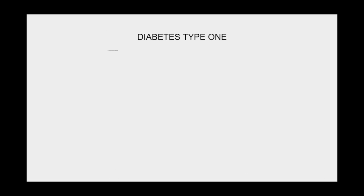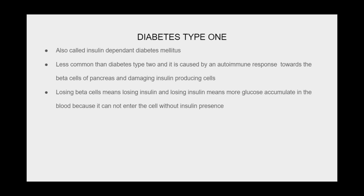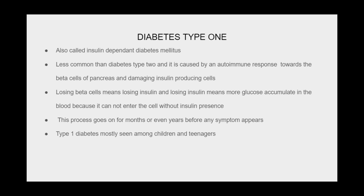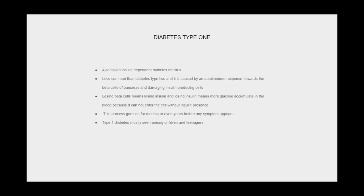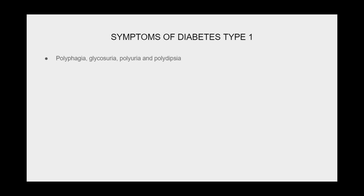Type 1 diabetes, also called insulin-dependent diabetes mellitus, is less common than type 2 and is caused by an autoimmune response that damages the beta cells of the pancreas, destroying insulin-producing cells. Losing beta cells means losing insulin, and without insulin, more glucose accumulates in the blood because it cannot enter the cell. This process can go on for months or even years before any symptoms appear. Type 1 diabetes is mostly seen among children and teenagers. Symptoms include polyphagia, glycosuria, polyuria, and polydipsia.